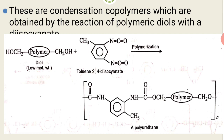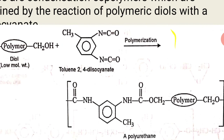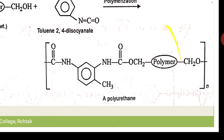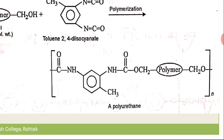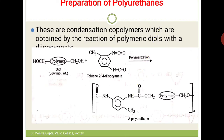This pre-polymer is then treated with toluene-2,4-diisocyanate. When both are condensed, polymerization occurs and the product contains NHCOO linkages — known as urethane linkages — giving polyurethane.